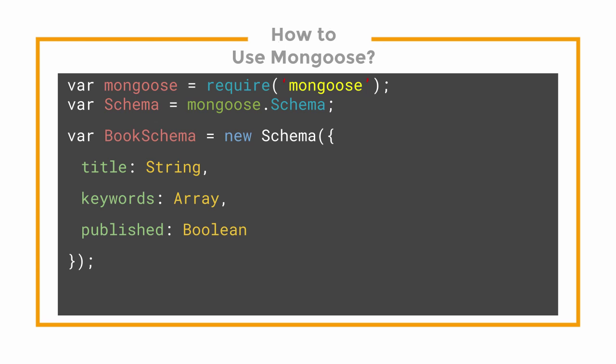Now, in order to use our schema in other files, we need to create an instance of the schema. And when using Mongoose, we call this instance a model. So now I can use the handy module.exports method given to me by Node, and I'm able to use my new schema in other files simply by requiring this one.